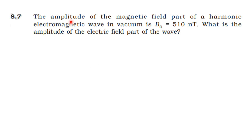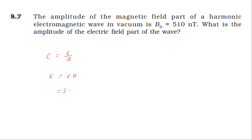From NCERT textbook, electromagnetic waves topic. The amplitude of the magnetic field part of a harmonic electromagnetic wave in vacuum is 510 nanotesla. We need to find the amplitude of the electric field part of the wave. Using the relation c = E/B, the formula is E = c × B.